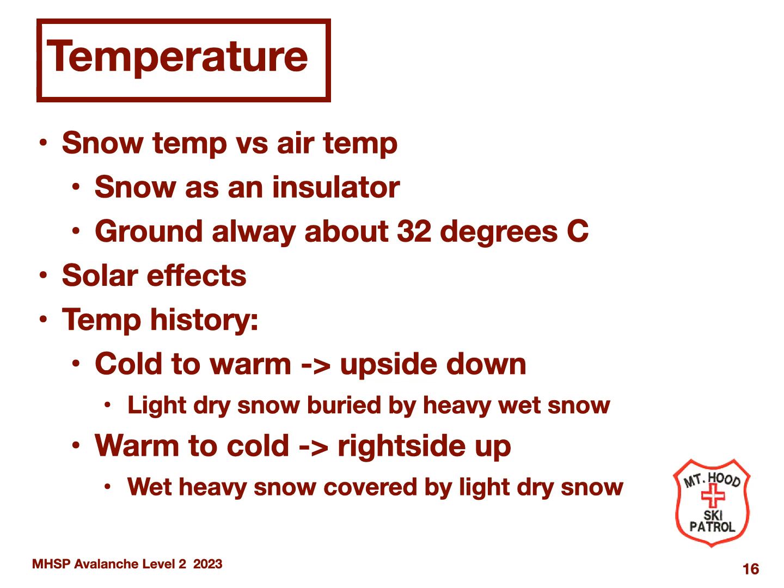In the opposite situation, where the storm starts warm and then gets colder, we end up with a low-density, poorly-consolidated layer on top of a high-density, well-consolidated layer, resulting in significantly reduced avalanche risk.